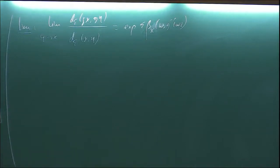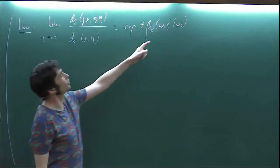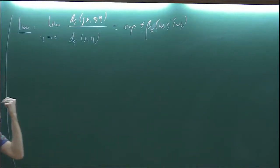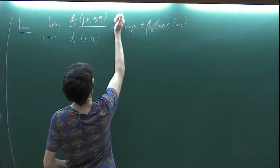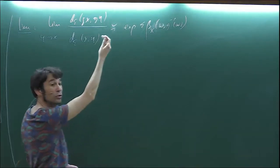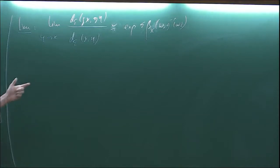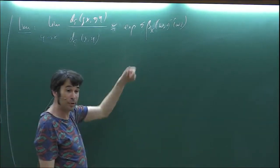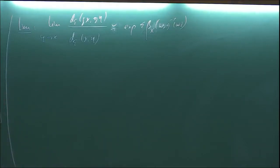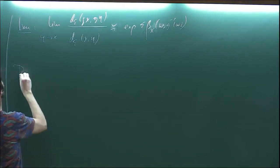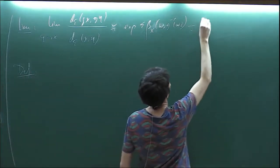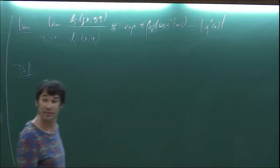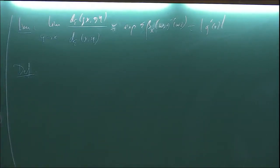I'm not very precise because I did not define precisely the Busemann function at infinity of a hyperbolic space, nor the Gromov product. This is essentially a quasi-continuous extension. It's not an equality, but up to some universal constant it will be equivalent. What you can see is that the action of G at infinity is like a conformal map, because it stretches the distances by a uniform factor, whatever way you are approaching the point X. This will stand for the derivative at a point X at infinity.